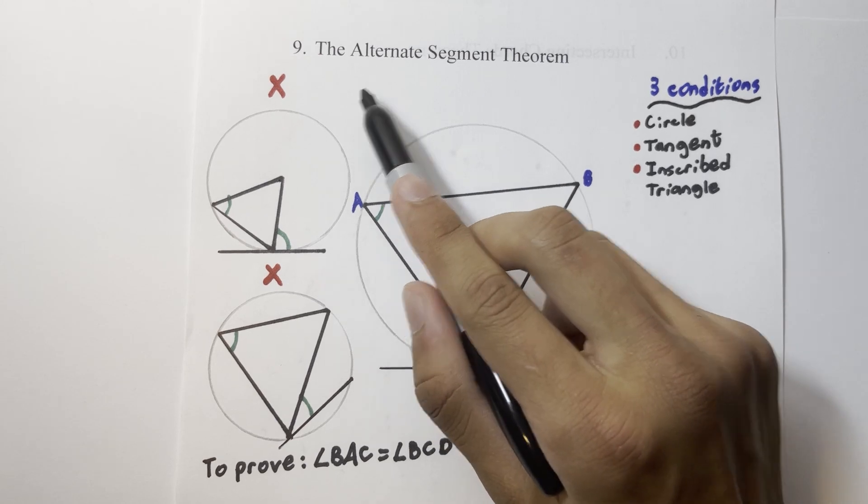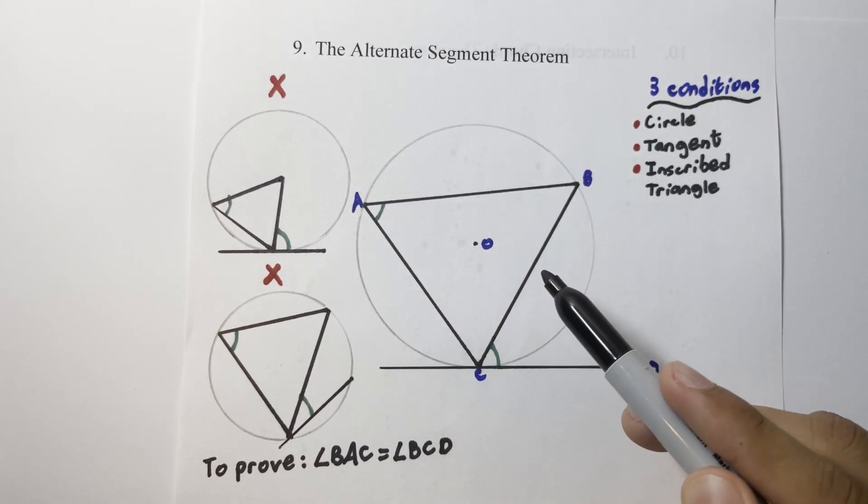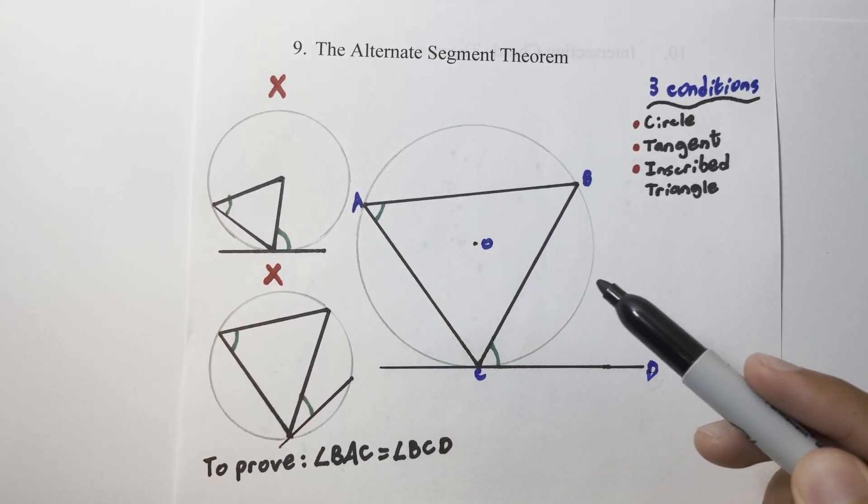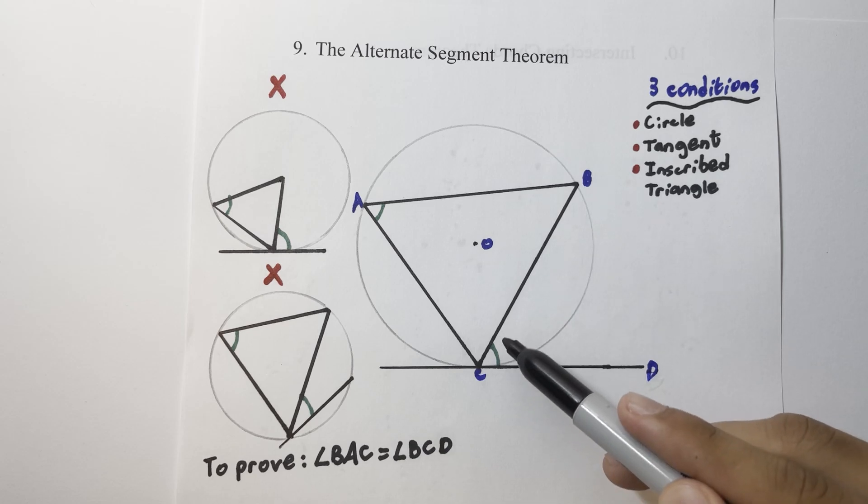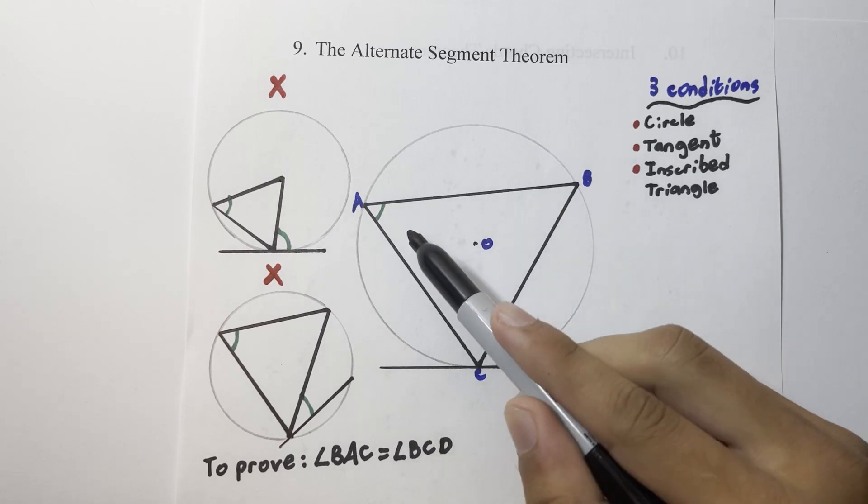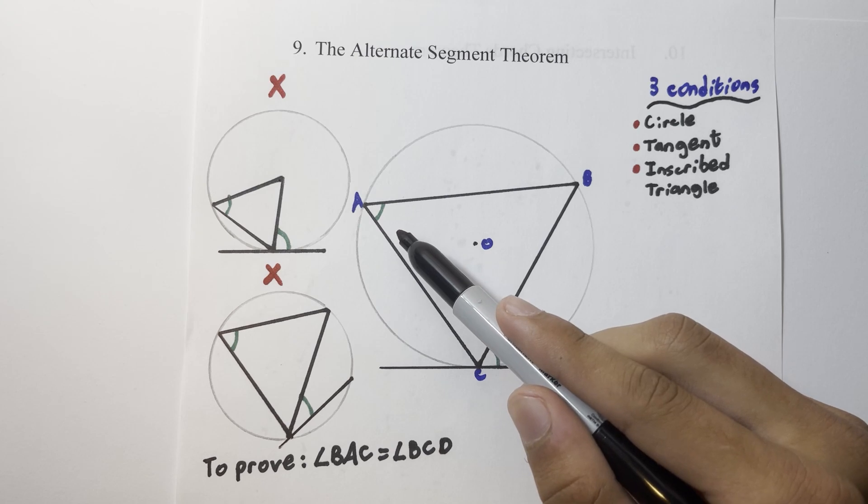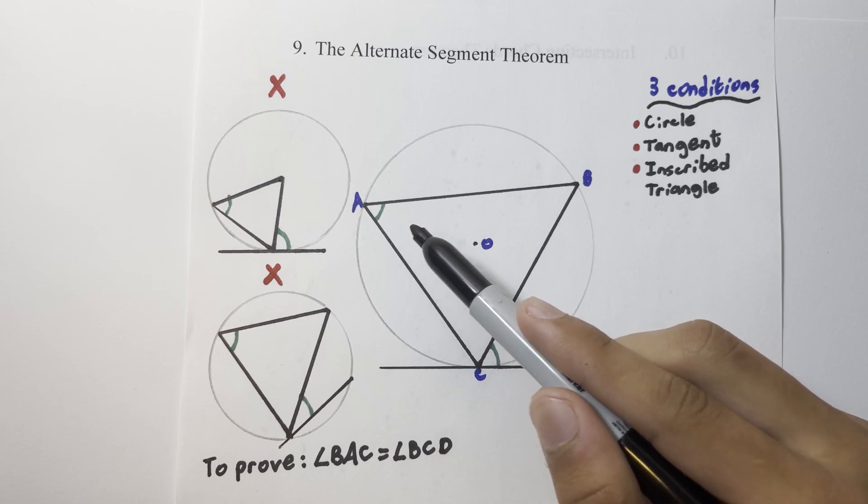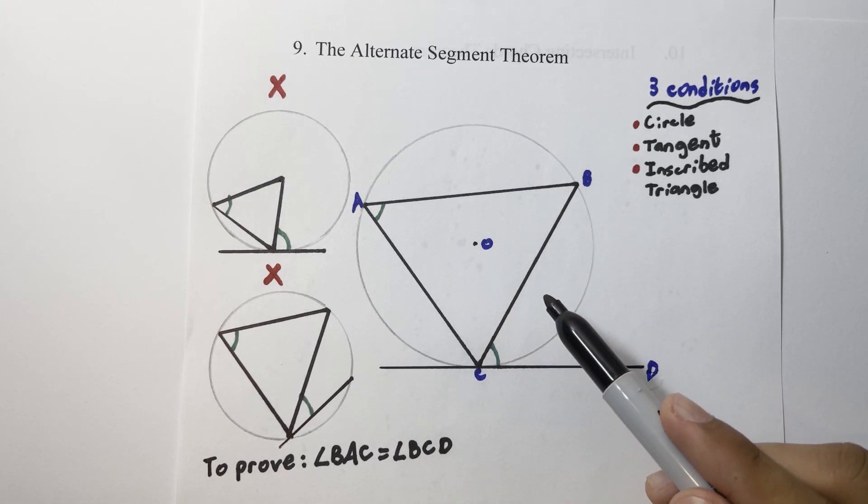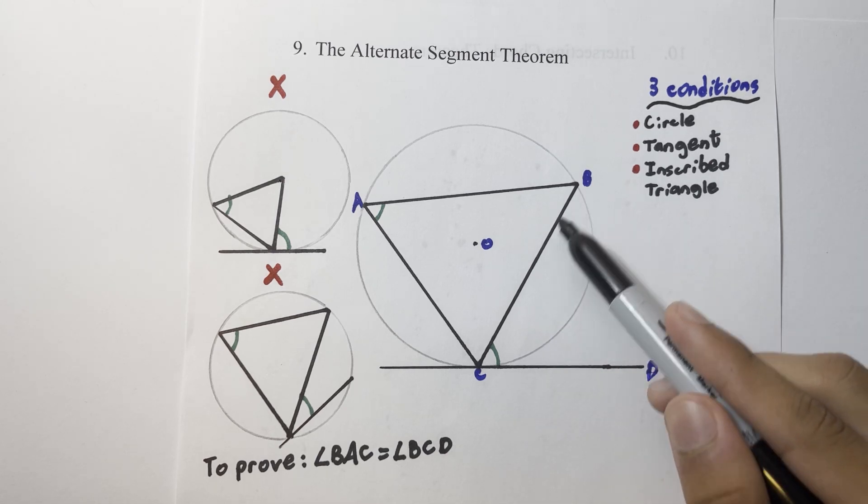The next theorem we're going to prove is called the Alternate Segment Theorem, which you might sometimes find written as AST. This states that the angle between a triangle and a tangent is equal to the opposite angle in that triangle, when that other angle is in the alternate segment. Remember that a segment is a region formed by a chord.